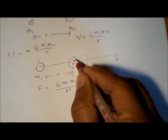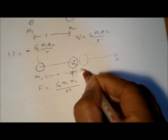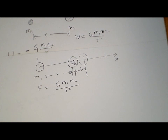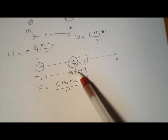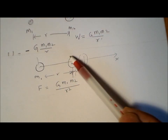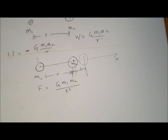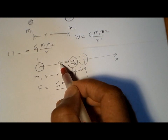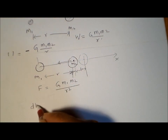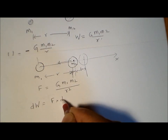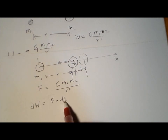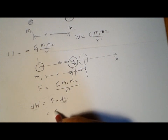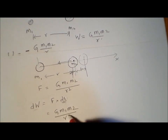We want to take mass m2 from this point a tiny distance dr. In differential calculus problems solved using integral calculus, we find the amount due to a small incremental change and then integrate over the whole range of movement. As we take this mass a tiny distance, we do some work against the force of attraction. We call this work dW, given by force multiplied by the tiny distance dr.